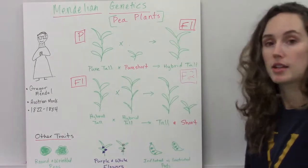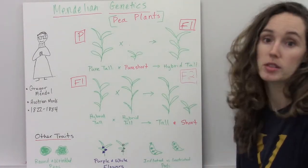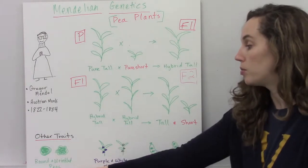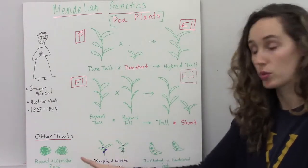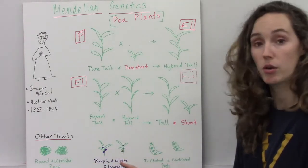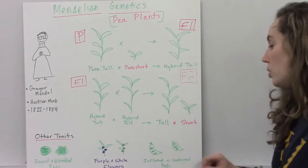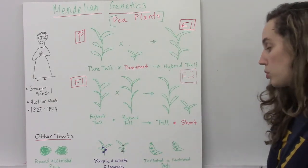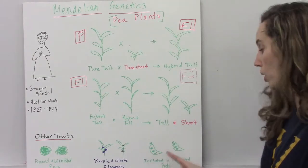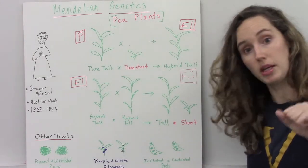Gregor Mendel studied many traits, and some of the other ones that he studied were whether the peas were round or wrinkled, whether the flowers were purple or white, and whether the pod that the peas were in was inflated or constricted tightly around the peas.